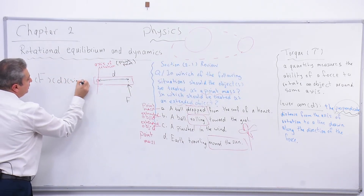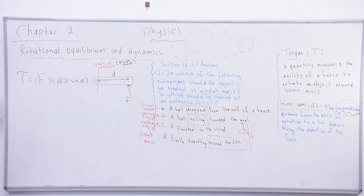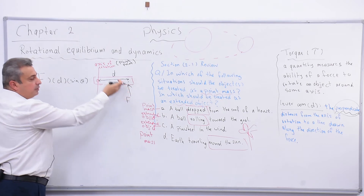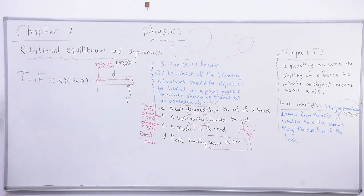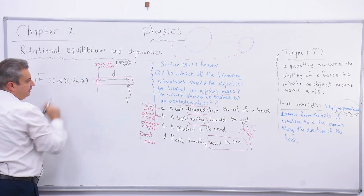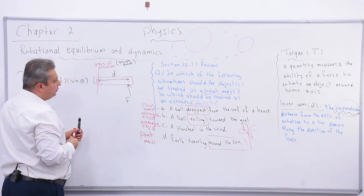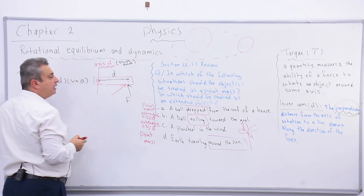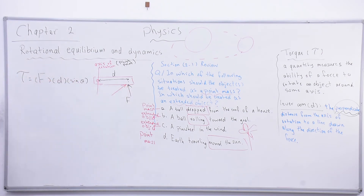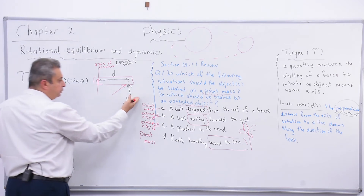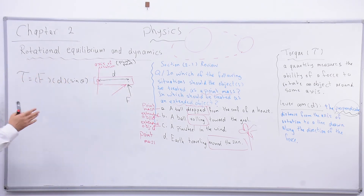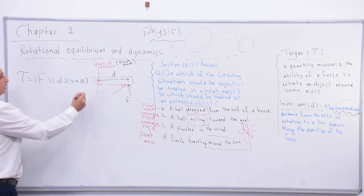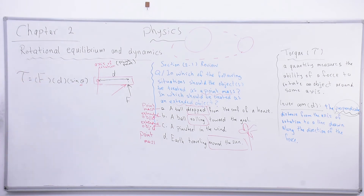We also include sine theta in the torque formula: τ = F × d × sinθ. This is because not every time is the force applied perpendicularly to the object - sometimes the force is applied at some angle. In that case, we need sine theta. Theta is the angle between the force and the lever arm (the distance from the axis of rotation).